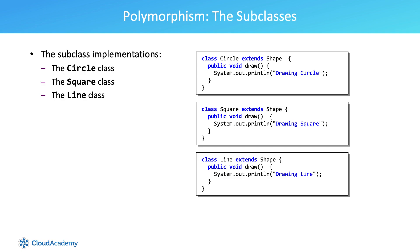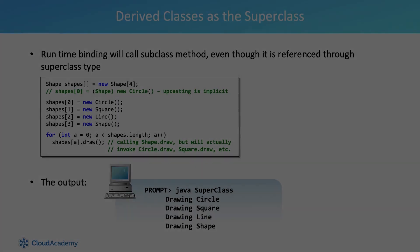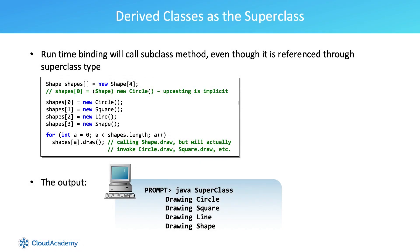Each subclass overrides the parent's draw method. We now store our specialized objects in the generalized container and call their draw methods. Notice that inside the for loop we have no idea what kind of shape we are drawing. This is polymorphism in action.